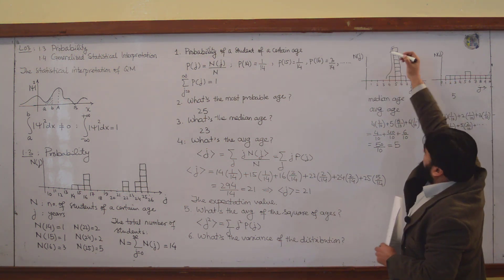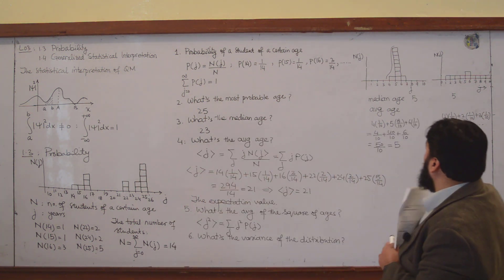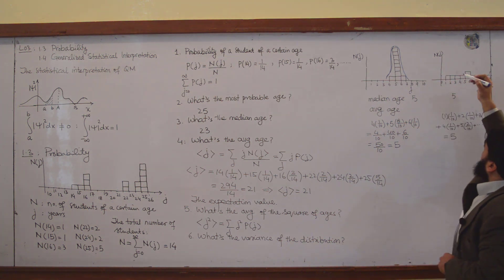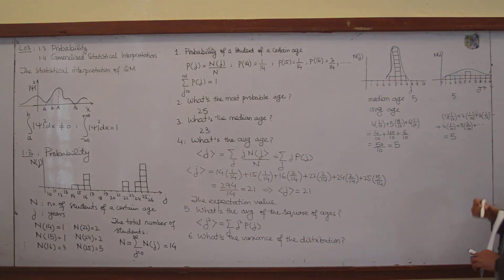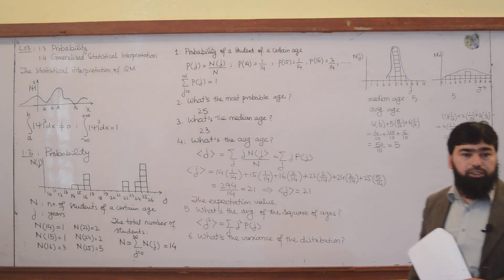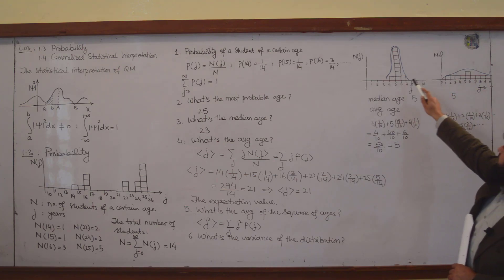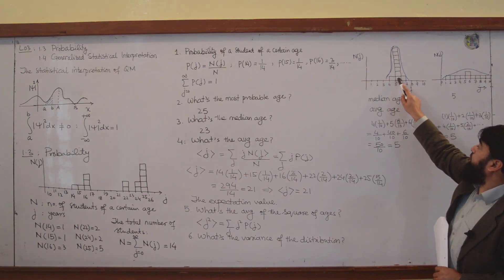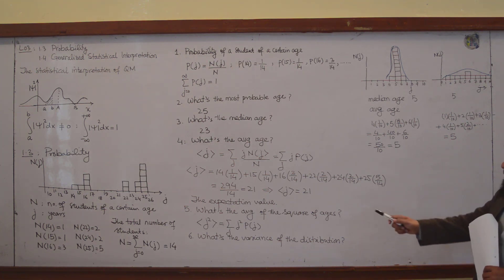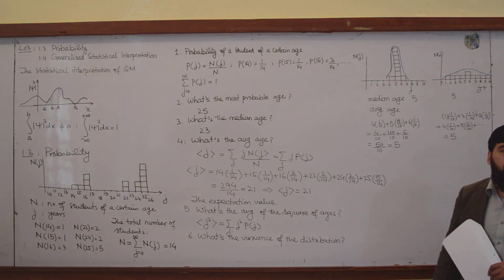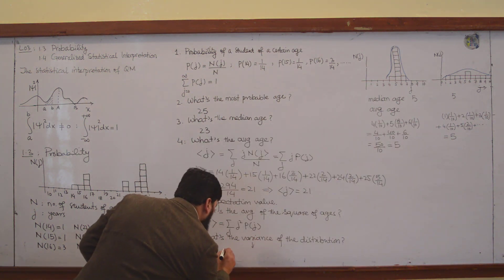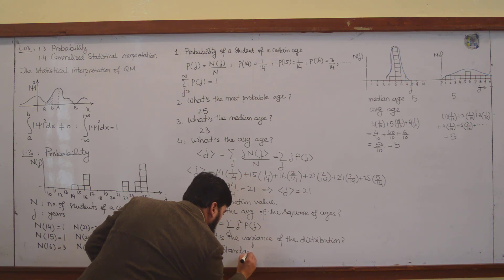If I plot the two distributions, one is plotted like this and the other like this. Which one has more spread? The second one has more spread around the average value. The average value is the same, but the spread is more. The variance actually calculates the spread around the average value, and we call this the standard deviation.